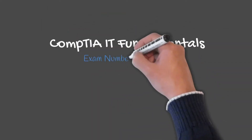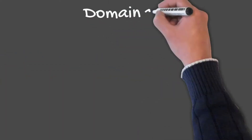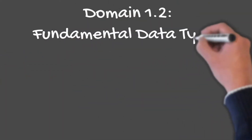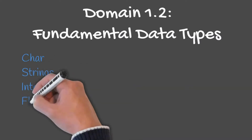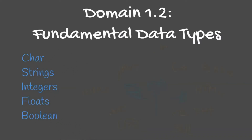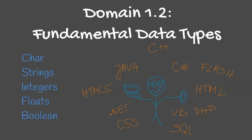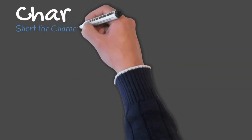Welcome back to your CompTIA IT Fundamentals training course. In this lesson we're going to talk about data types. Data types are an attribute of data, letting a compiler or interpreter know how a programmer would like the data to be used. The first data type we will discuss is char, which is short for character.